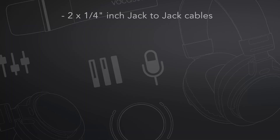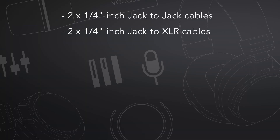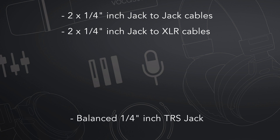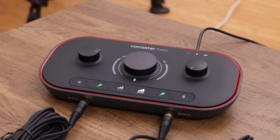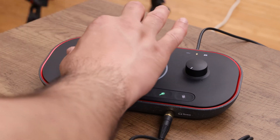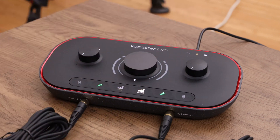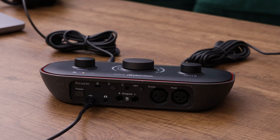To connect active speakers to your Vocaster 2, you need either quarter-inch jack-to-jack cables or quarter-inch jack-to-XLR cables. We recommend using balanced TRS quarter-inch jack cables for the best results. Ensure your speakers are connected to power but don't switch them on yet, as this can cause damage when connecting cables. Make sure the host dial on your Vocaster is turned down before connecting.